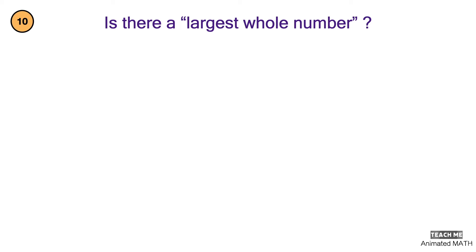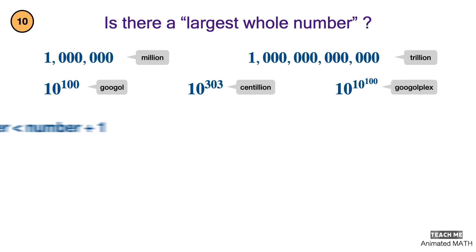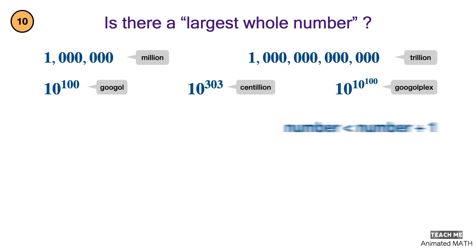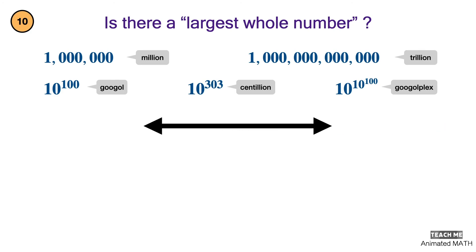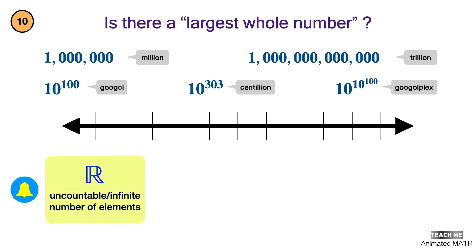What is the largest number you can think of? Is it a million? A trillion? A Google or maybe a centillion? 10 raised to a Google is a Googleplex. There is always a larger number than whatever number you can write. The real number line stretches infinitely to the left and to the right. There is no largest or smallest number because the set of real numbers has uncountably many elements. The answer is no.